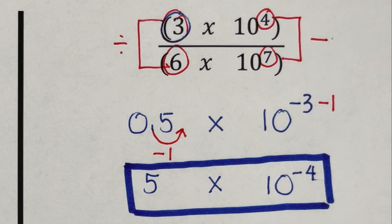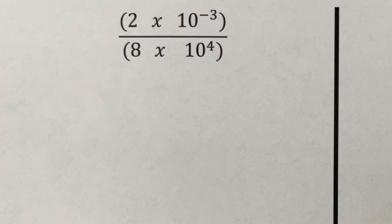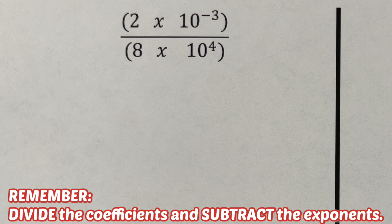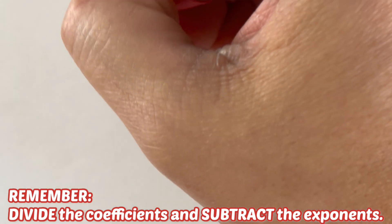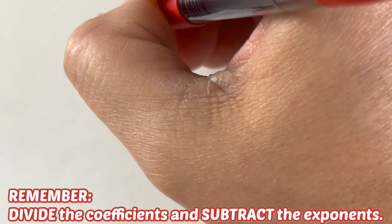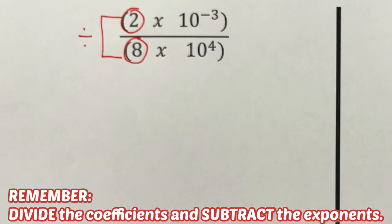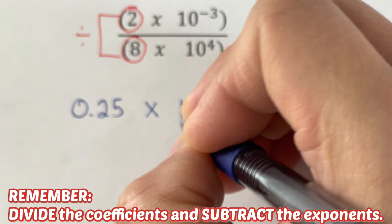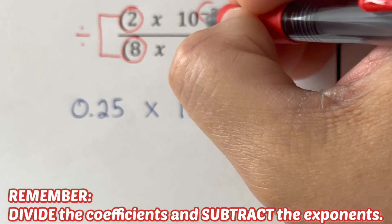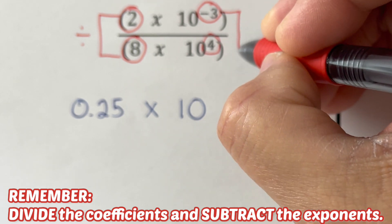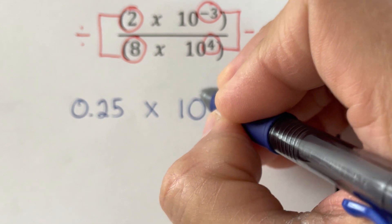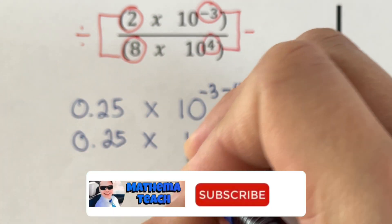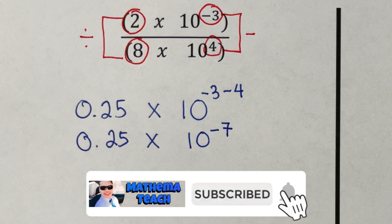Now for the next example, we divide the coefficients and subtract their exponents. So 2 divided by 8 gives us 0.25, times 10 to the power of negative 3 minus 4. That simplifies to 0.25 times 10 to the power negative 7.